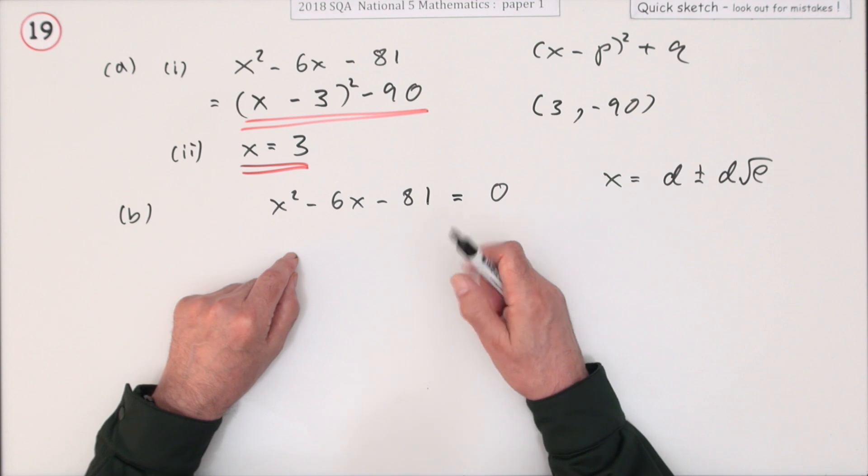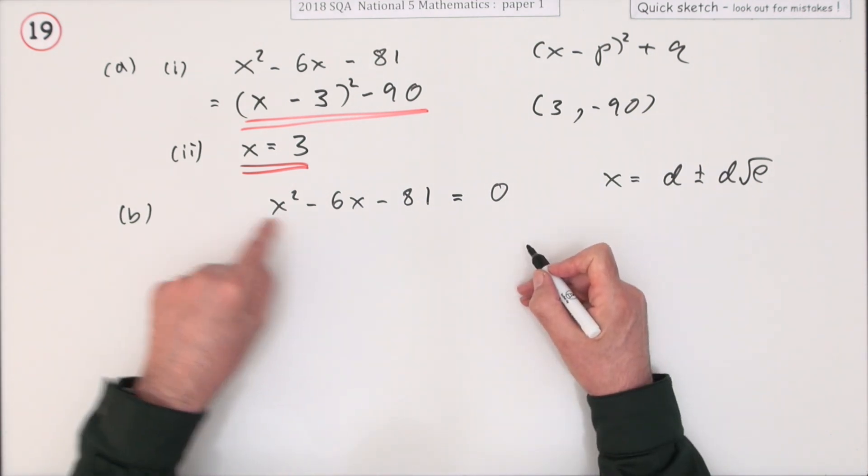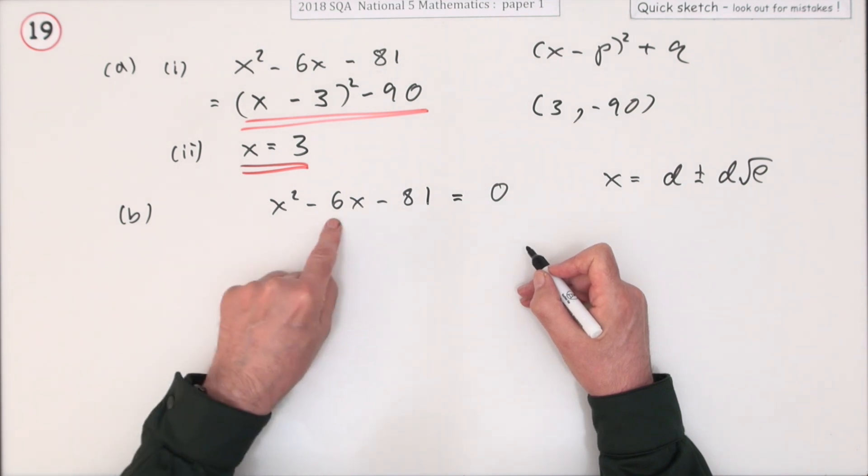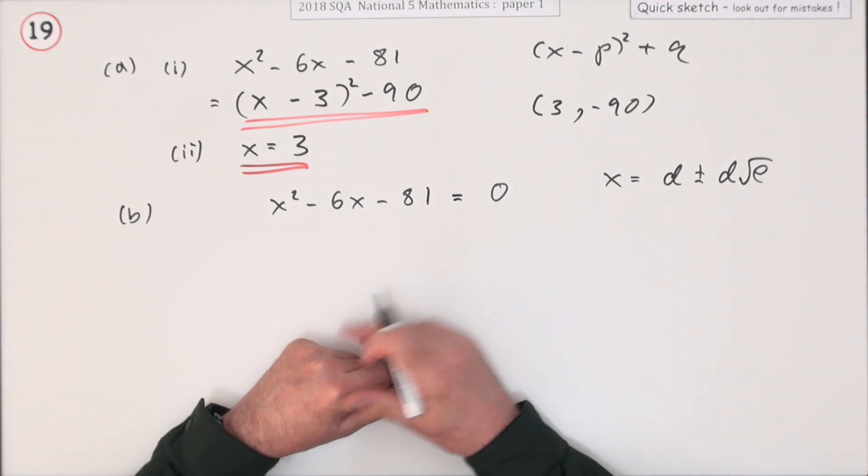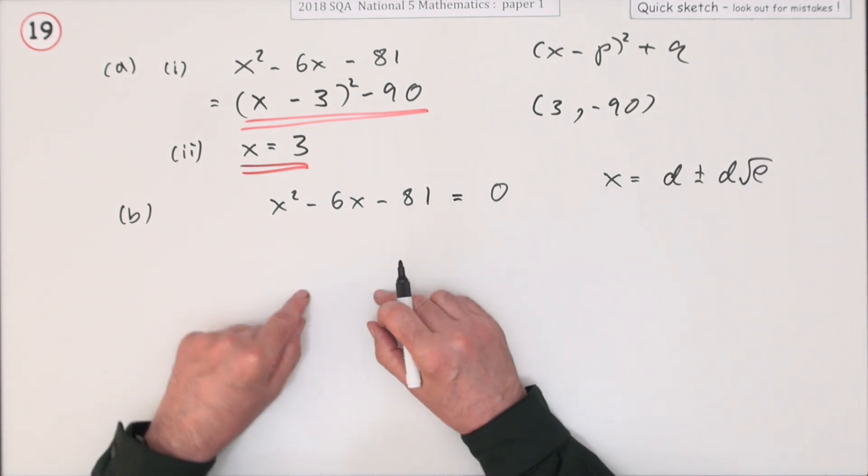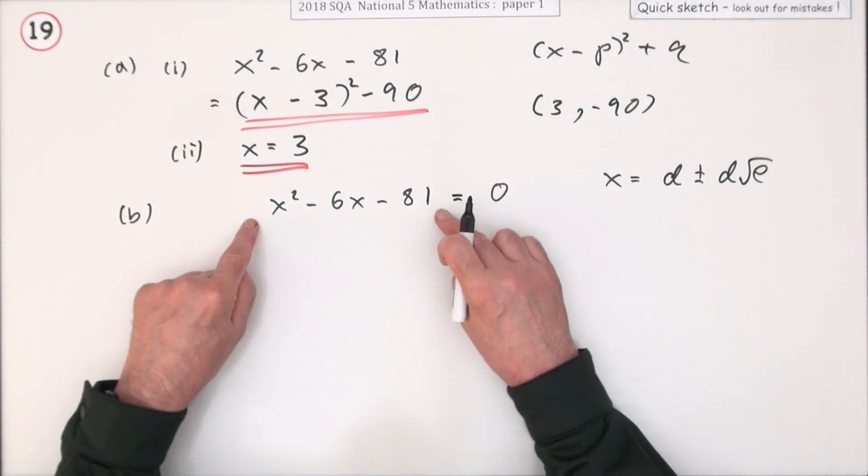Well there's two ways you could do that. You could just start with this and write down the quadratic formula putting in the various parts for a, b and c. 1, negative 6 and negative 81. And work your way through it and that would take you there. But another way of doing it since you went to the trouble in the first part to complete the square is to say this.